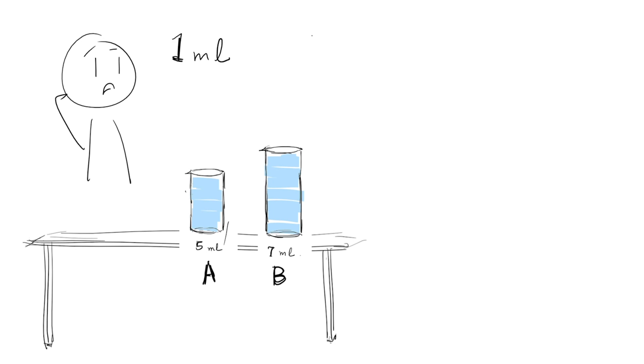You are given two beakers, A that can contain 5 milliliters of water, and B 7 milliliters of water. There are no scale marks on the beakers, so the only volumes you can measure directly are 5 and 7 milliliters by completely filling the beakers. The question is, with just these two beakers, can you measure precisely 1 milliliter of water?